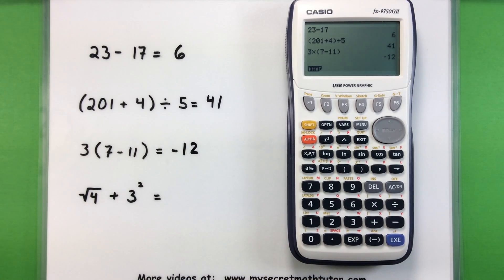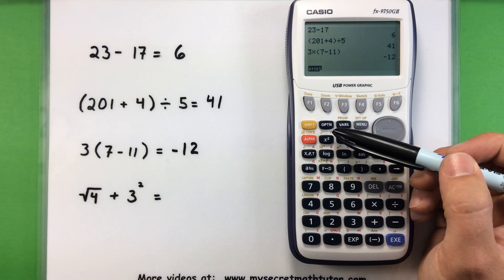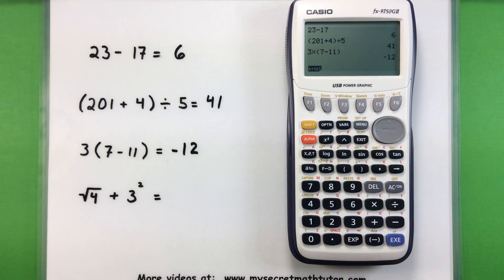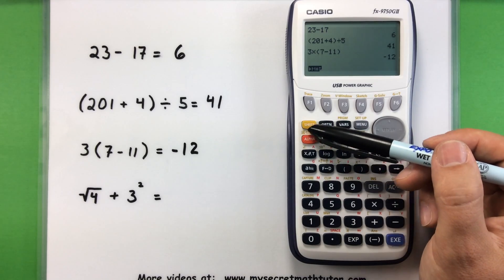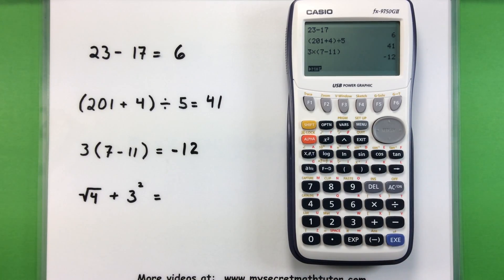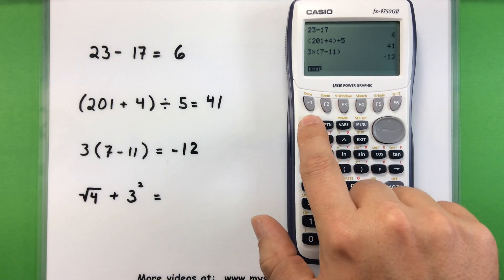Now, if you do have to use one of those features or functions that needs a secondary or shift button, no worries, you just have to figure out where it's located. For this problem, I want to do the square root of 4 plus 3 squared. So I need to figure out, hey, how do I do the square root of 4? The good news is the square root is just right above this button in yellow. And since it is in yellow, I know I'm going to have to press my shift key first. So let's go ahead and do that. So I'm going to press shift. Press that square root button now.